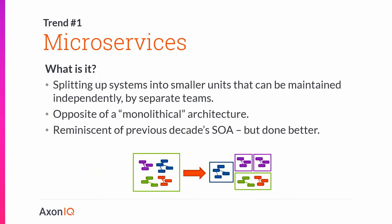The first trend is microservices. The idea is actually really simple: it's about splitting up a system into smaller units — the microservices — that can be maintained and deployed independently, if needed by separate teams. It's often positioned as the opposite of a monolithic architecture, and people are looking to migrate from monolith to microservices. If you remember last decade's service-oriented architecture trends, this is very similar — just done better: SOA with lessons learned, more focus on autonomy and being lightweight.